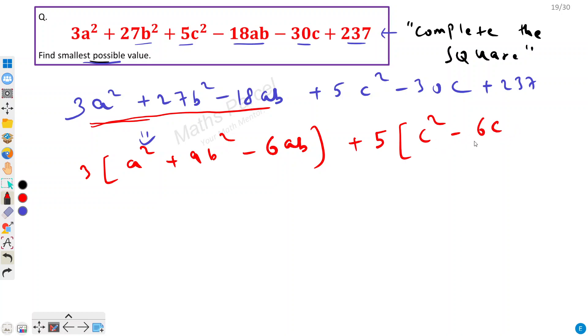But to complete this square I would need c minus 3 whole square. This can be written as 2 times 3 times c, so I can form a square of 3, so I would need 9 here. Now since I have taken 9 here, so 9 times 5 is 45, so here the remaining would be 237 minus 45, that would be 192.